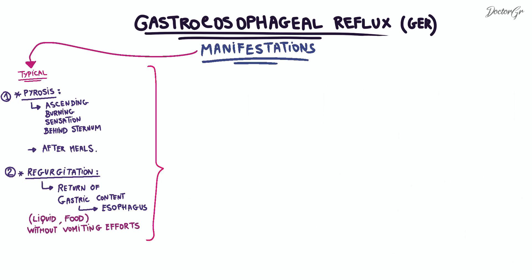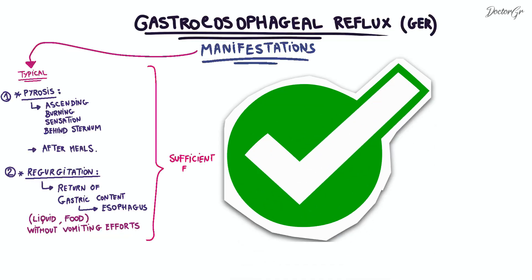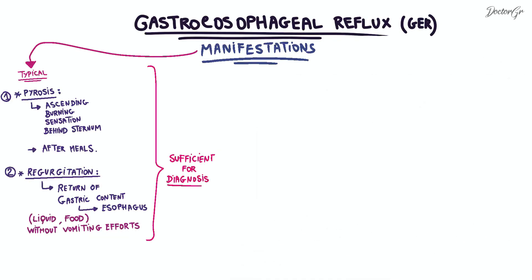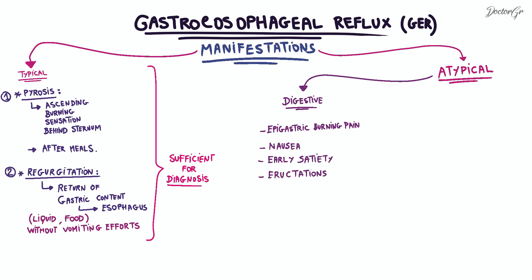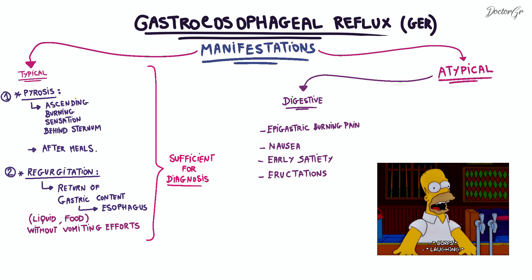These typical symptoms, although mild and intermittent, are often sufficient for diagnosis and do not require further complementary exams. However, atypical manifestations like epigastric burning pain or digestive issues such as nausea, early satiety, and eructation — which is a sound produced by the expulsion of gas from the stomach to the mouth — may also be present.